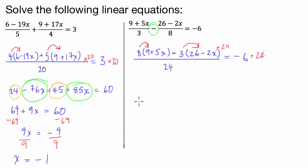So I've got 8 times 9, which is 72, plus 8 times 5x is 40x. Then I've got minus 3 times 26 is negative 78. Then I've got negative 3 times negative 2x is positive 6x. And that's equal to 6 times 24, which is 144.